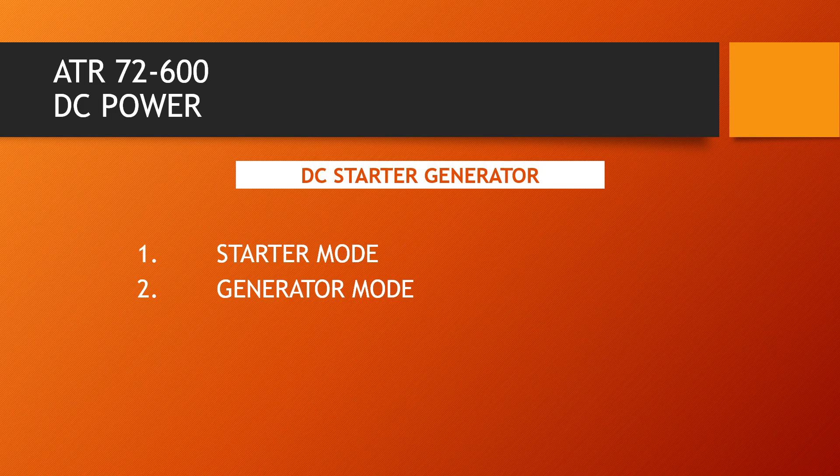Starter generator works in two modes. In starter mode, the starter generator is connected to the aircraft main battery, or external power, or the aircraft main battery and an operating generator for cross-start on ground. During the start sequence, the starter generator rotates the rotor up to self-sustaining speed, up to 45% NH. The start sequence automatically ends when NH reaches 45% and the associated engine start-on light turns off.